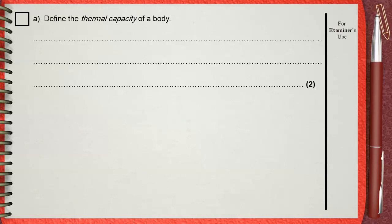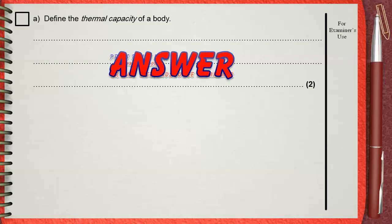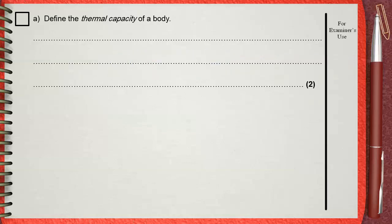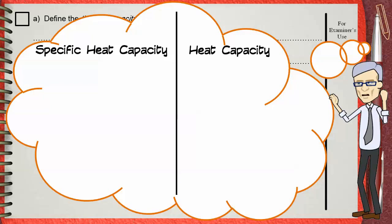Define the thermal capacity of a body. To answer this, you must first know the difference between the specific heat capacity of a body and the heat capacity of a body — without the word 'specific.' Heat capacity is the thermal capacity.